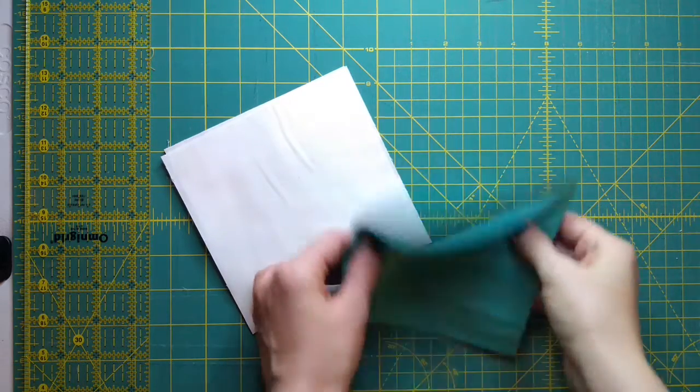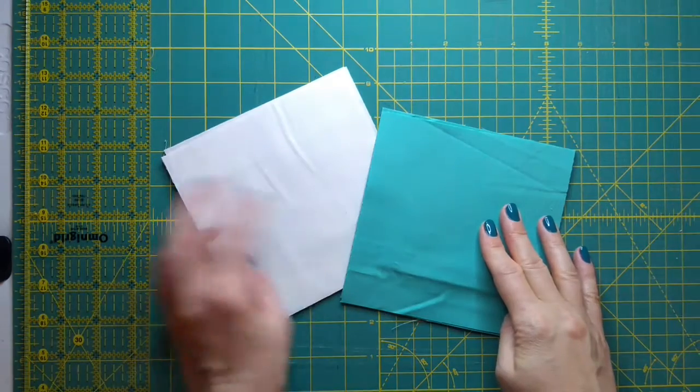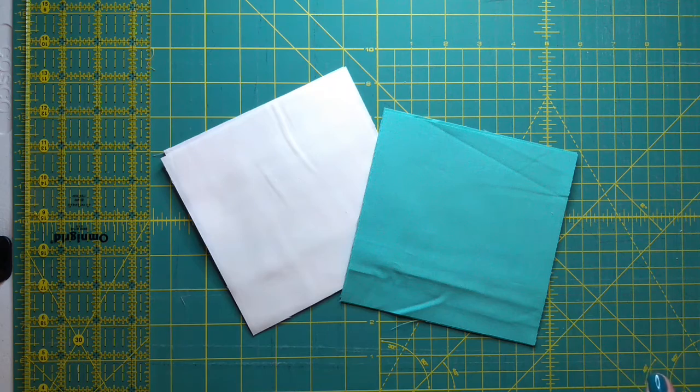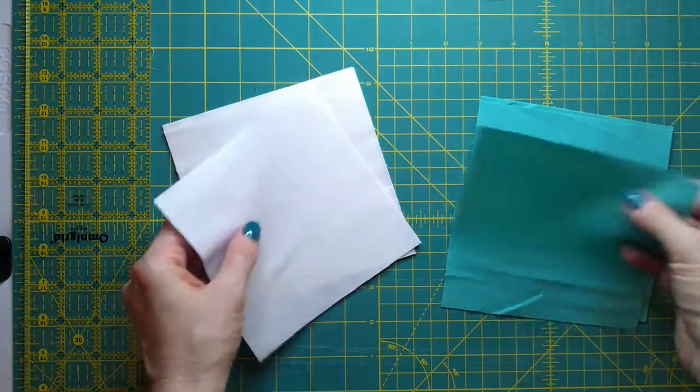I'm going to be making mine today with two solids. This is a Moda Bella and I'm not quite sure what color it is, and this is Kona cotton in bone. The method I'm going to use is the same as last week's method, so I'm going to show footage from that where it's a four at a time method for half square triangles.